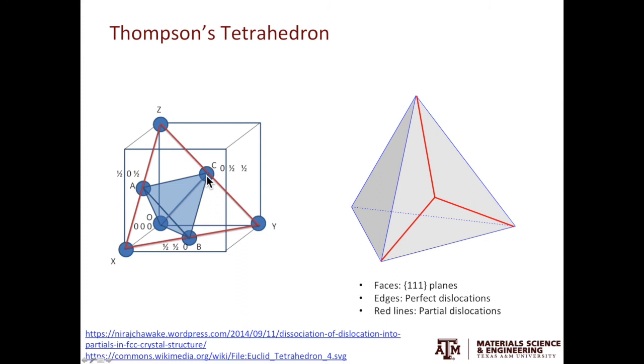Then what is the use of the Thompson tetrahedron? If you look at the four faces, these are the slip planes in FCC metals. These are the 111 planes. If you look at all the edges, these are the perfect dislocation Burgers vectors. If you look at the three red lines drawn on one of the faces, these are the Burgers vectors of the partial dislocations. Because of this specific geometry, we can get one special type of defects in FCC metals, especially the metals after irradiation.